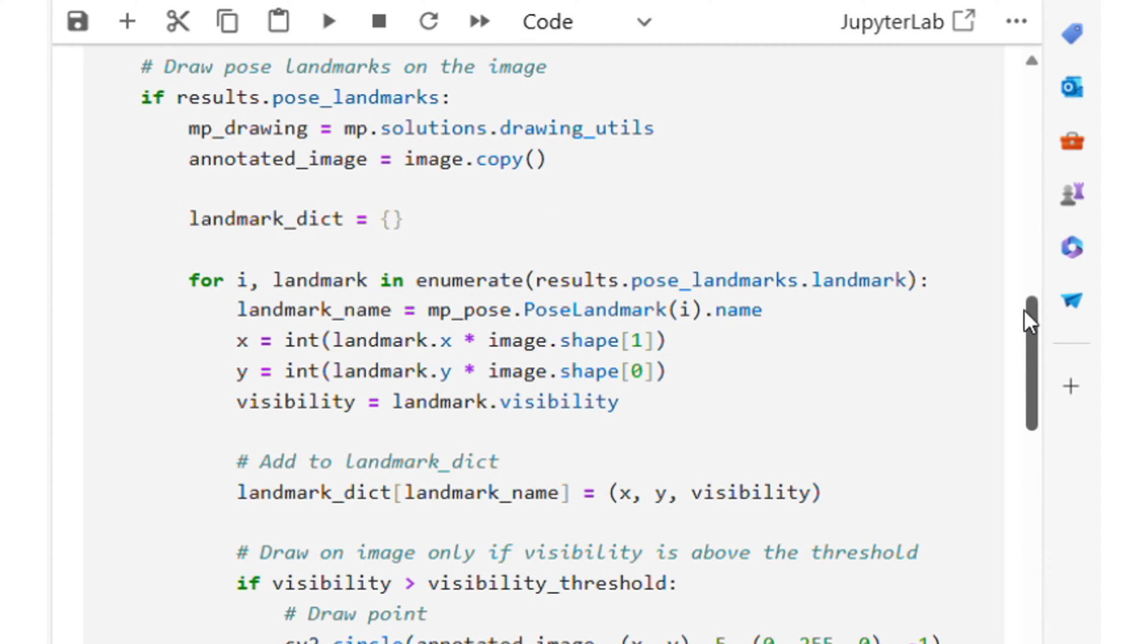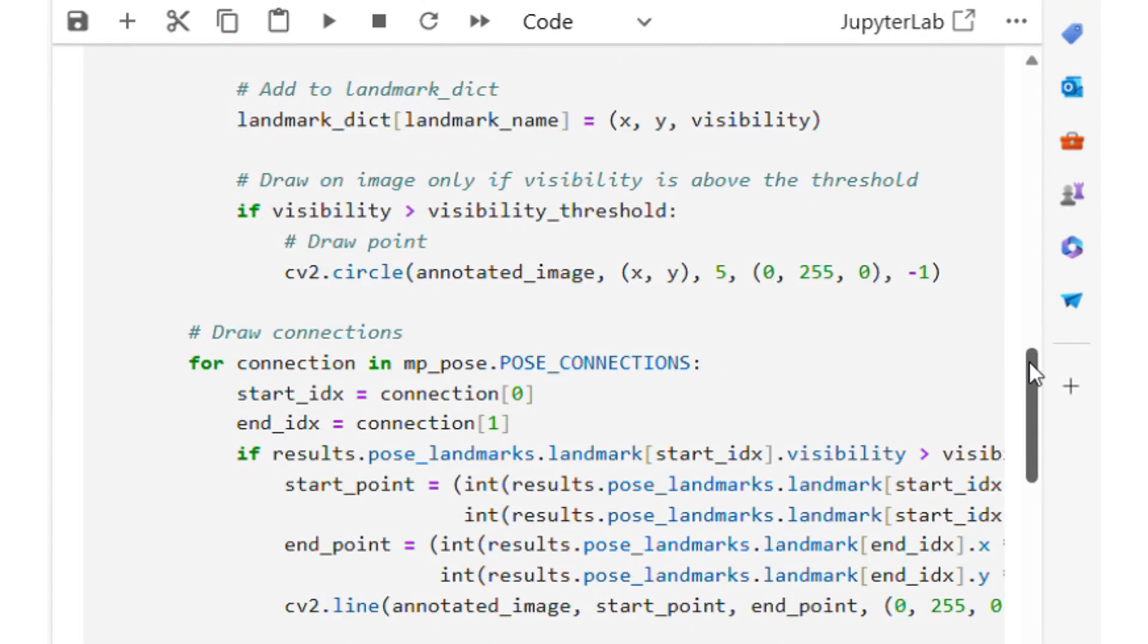The original MediaPipe landmarks are normalized based on the height and width of the image. That is, original landmarks are normalized between 0 and 1. This function brings the landmarks back to image pixel coordinates so that actual points can be drawn on the images. The function also draws lines for the skeleton.